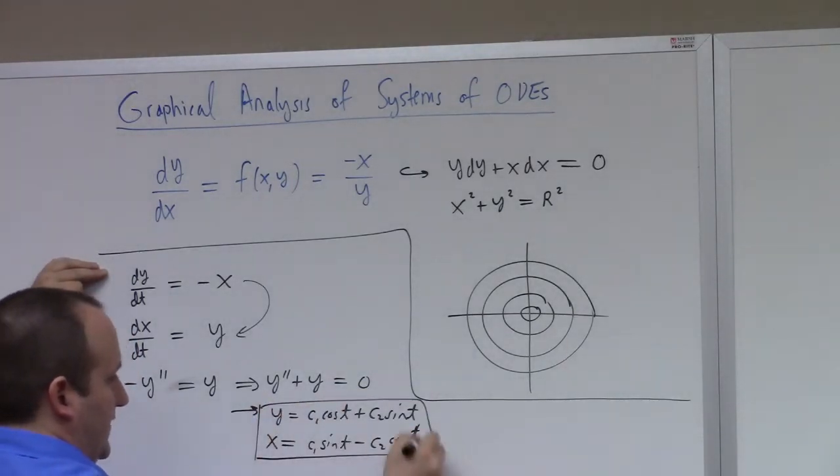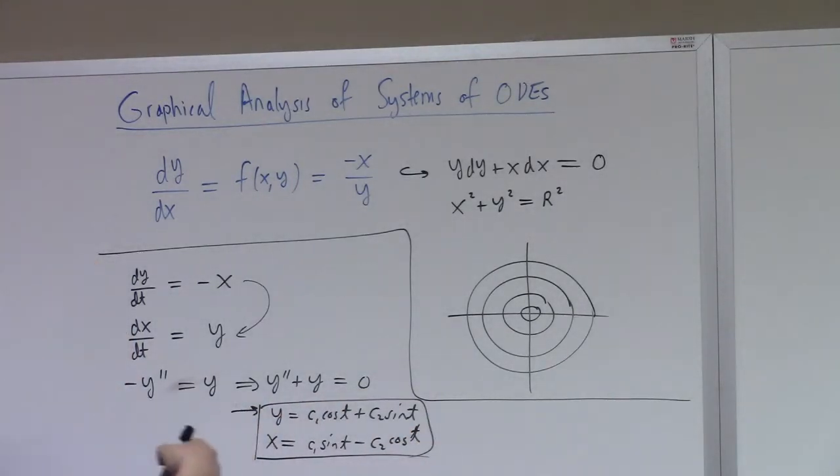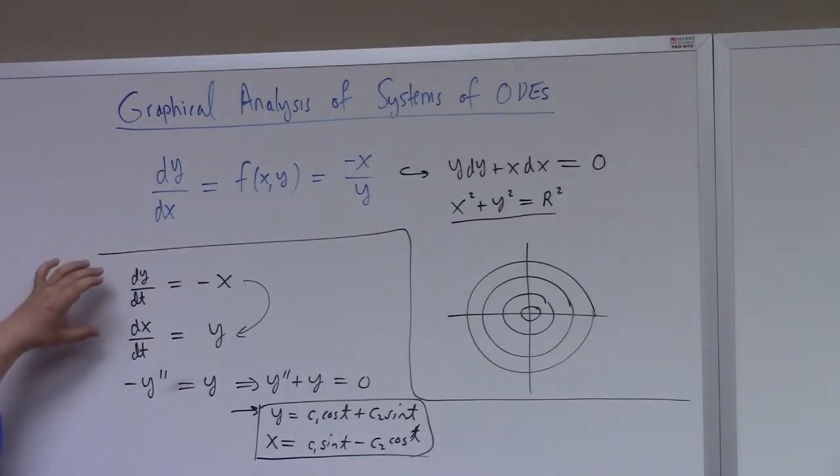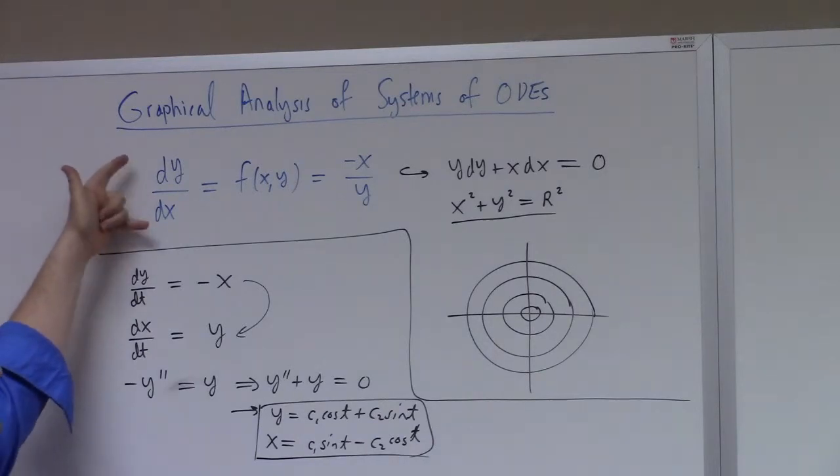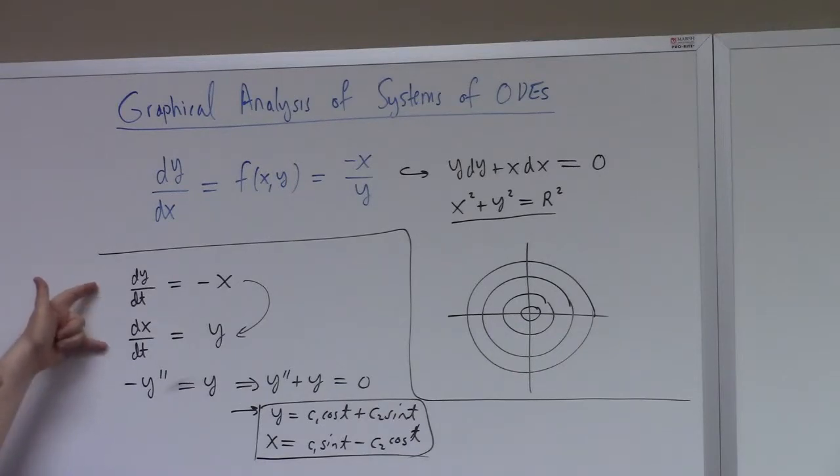Which tells me that Y equals C1 cos(t) plus C2 sin(t). And then X equals minus dy/dt, so that's C1 sin(t) minus C2 cos(t). These are parameterizations of these circles up here.